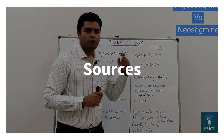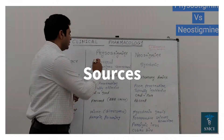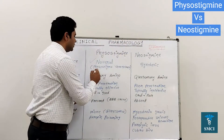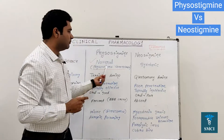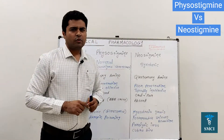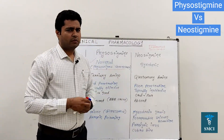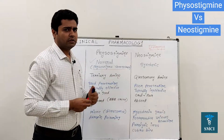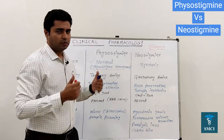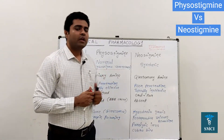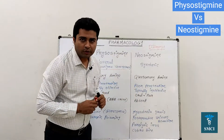First of all, let's look at the sources. Physostigmine is actually from a natural source — the plant name is Physostigma venenosum. An Ayurvedic preparation is also available for this drug, but in allopathy, a purified molecule is used. Neostigmine, on the other hand, is a synthetic molecule.